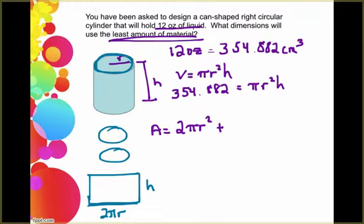So the area of my rectangle is 2 pi r h. So I can add that to my area for my 2 circles and now I have the formula for the area of our cylinder.